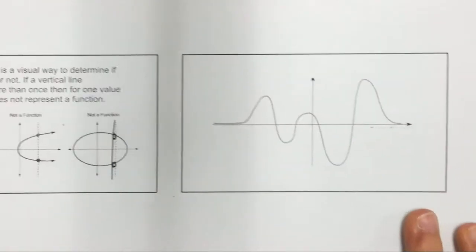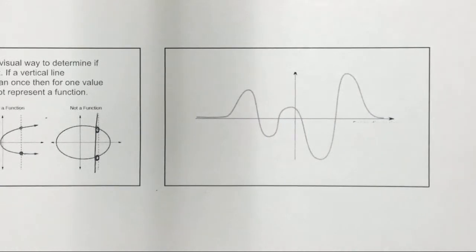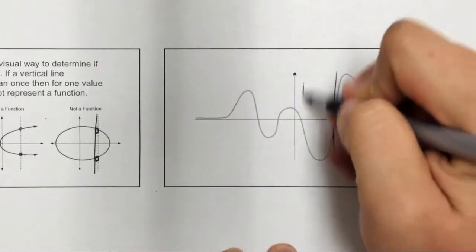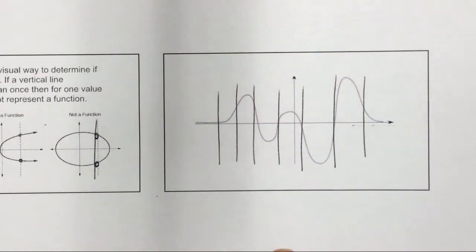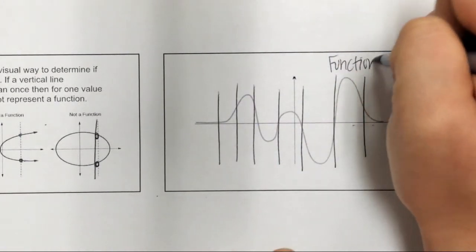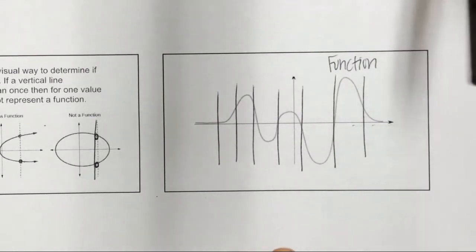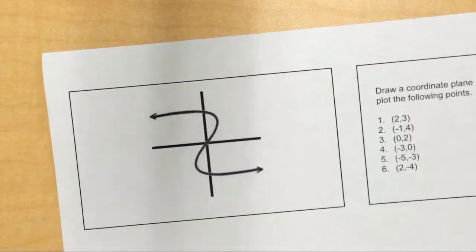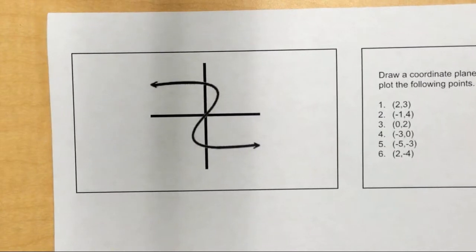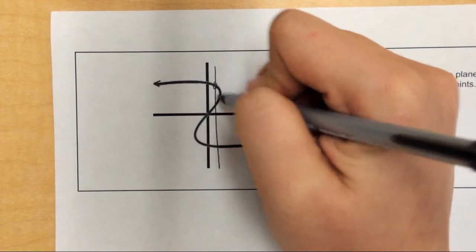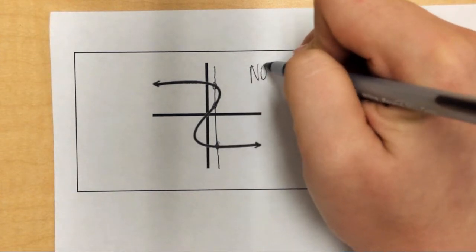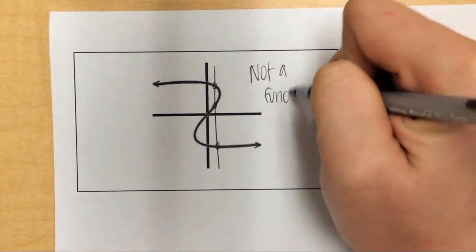Look at this graph — can I draw a vertical line that crosses more than once? No. Every vertical line I draw crosses the graph exactly once, so this graph is a function. And the last example — is this one a function? No, because you can draw a vertical line and it crosses three times, so that makes it not a function.